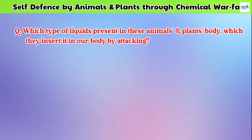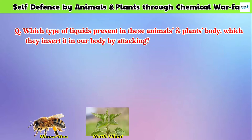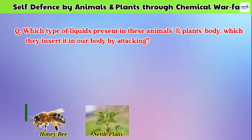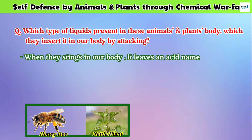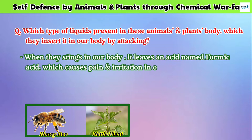If we talk about honey bee or nettle plant, then when they sting our body, it leaves an acid named formic acid in our body, which causes pain and irritation in our muscles.